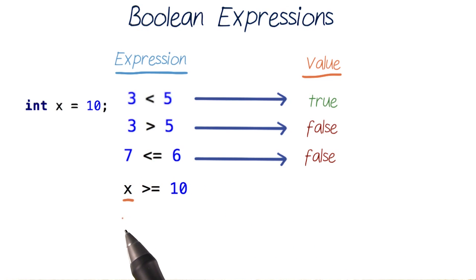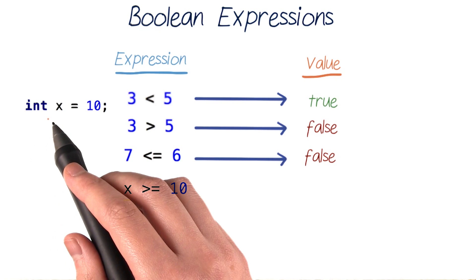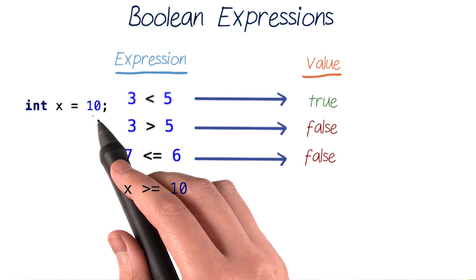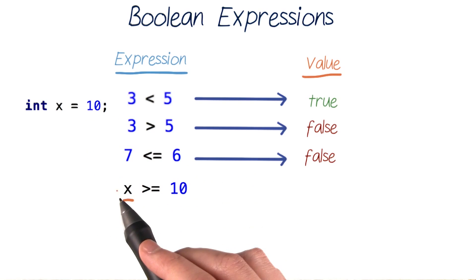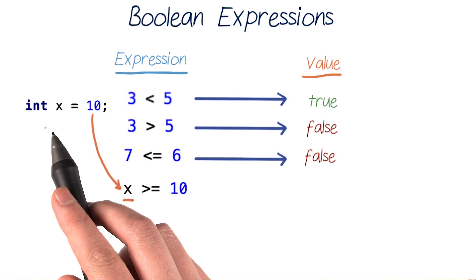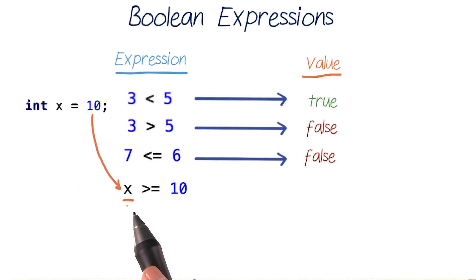And instead of using numbers, we can use variables in these comparisons too. Like say we've declared an integer variable named x and initialized it to 10 before starting these comparisons. We can then compare that variable to another number or variable. Like this expression, which tests is x greater than or equal to 10? Java will see this and say x is 10. So yes, it's equal to 10, and the expression is true.